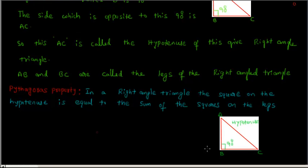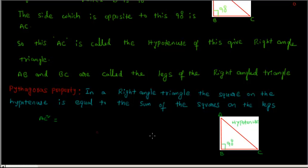In this right-angled triangle ABC, the hypotenuse is AC and the legs are AB and BC. The Pythagoras property states that AC squared is equal to the sum of the squares on the legs — that is, AB squared plus BC squared. This is called the Pythagoras property.